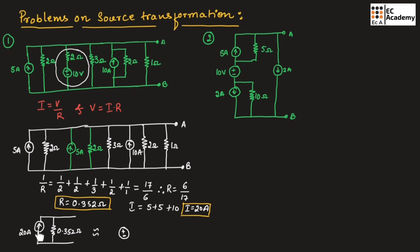Here we have written positive and negative because the current is moving upwards, and we can write the resistor in series. If we multiply 0.352 by 20 amperes it will be 7.058 volts, and this resistor should be connected in series with the voltage source.